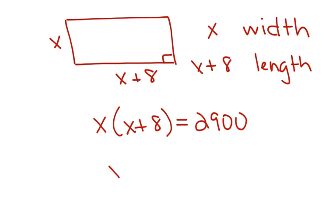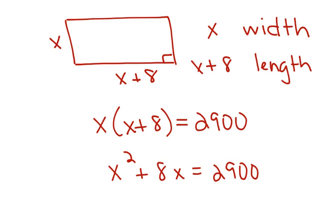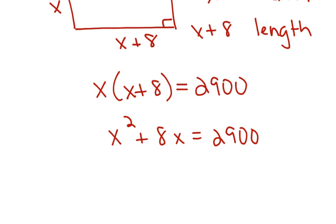So how do I solve this? I get X squared plus 8X is equal to 2,900. We reviewed quadratics earlier. The best way to solve this problem is to get it equal to 0. It is factorable. However, you probably don't want to figure out which two numbers multiply to give you negative 2,900 and add to give you 8.